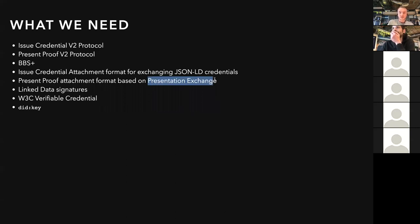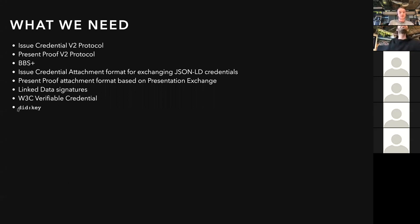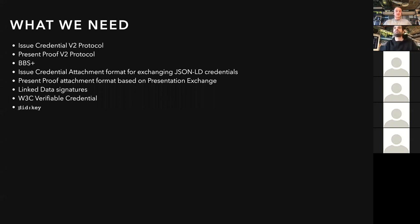For proof negotiation, we've used Presentation Exchange, which is defined under DIF, the Decentralized Identity Foundation. We need support for linked data signatures to do verifiable credentials. As a starter, we went with using DID Key as issuer and subject identifiers, mainly because it's easy and doesn't require a ledger — so we can show the whole interaction without needing to tackle the problem of publishing BLS keys to a ledger.